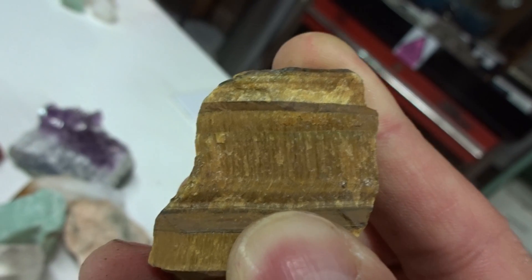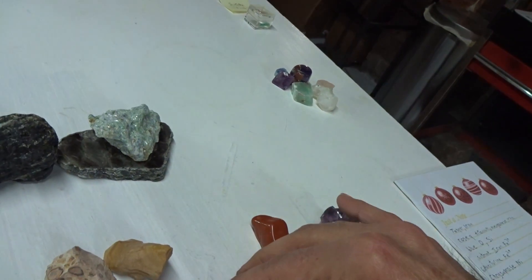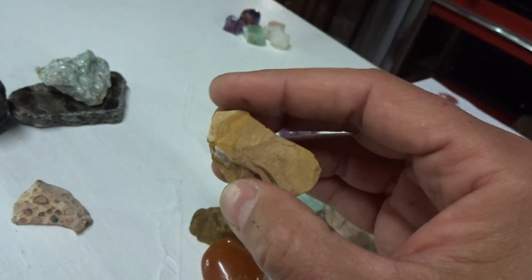Chrysotile was mined in Canada for an insulator for houses and buildings.